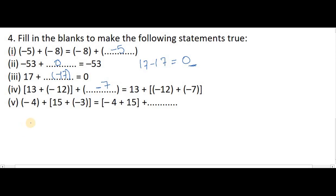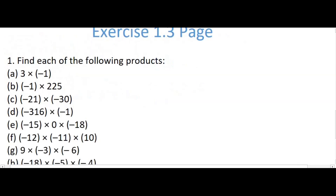Next: minus 4 plus 15 plus minus 3 equals minus 4 plus 15 plus blank — the missing number is minus 3. Whatever number is missing from the LHS and RHS, you check and write it in. Now we have completed Exercise 1.2 and we are moving on to Exercise 1.3.